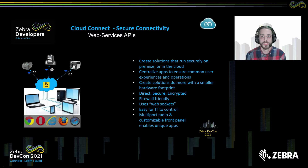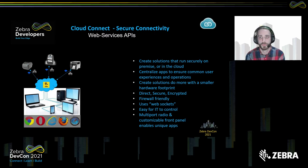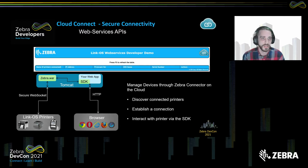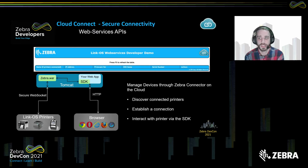Cloud Connect gives our device the ability to directly connect to apps running in cloud environments. It centralizes apps that can run across multiple devices, ensuring common user experiences no matter what device is being used. We have direct, secure, and encrypted connections, making it firewall-friendly and easy for your IT to control. Within the web services provided through our Zebra SDK, it becomes very easy to discover your connected printers, connect to them, and interact with them on the cloud.